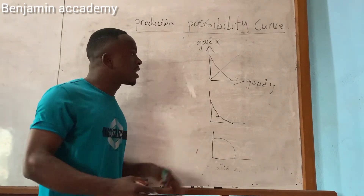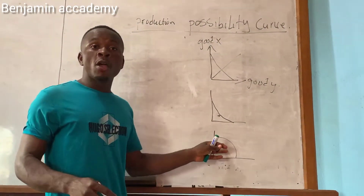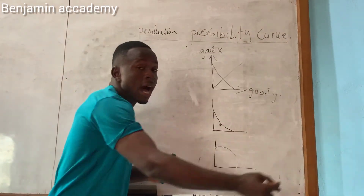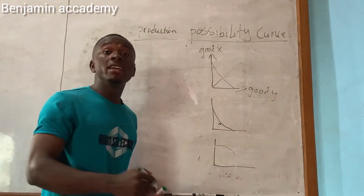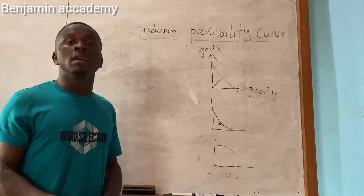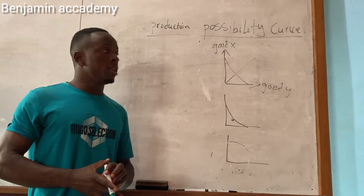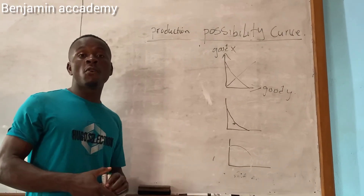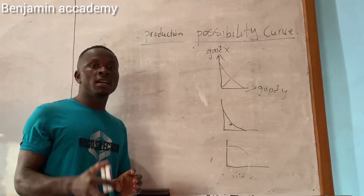In a convex PPC, the curve goes outwardly, showing economic growth. At this level, population size increases, there is full utilization of economic resources, the standard of living is high, and the level of technology is high. In our next video we'll be taking up questions and answers on the production possibility curve, so go to video four and don't forget to subscribe to our channel.